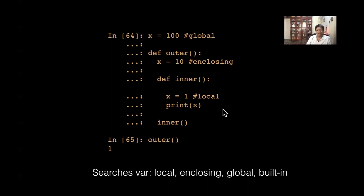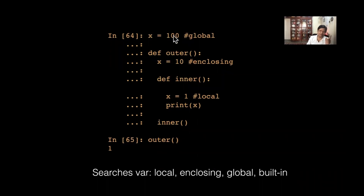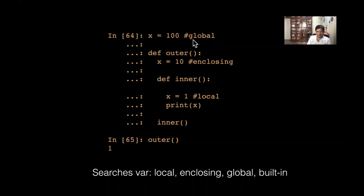C has similar scope features, but one important difference is that in Python we don't declare variable types. Objects are more important — 100 is an object and I give it the label x. In C, you declare 'int x' and x can only take integer values. Python is very different in how variables work. Passing arguments is a bit tricky, so please pay attention.